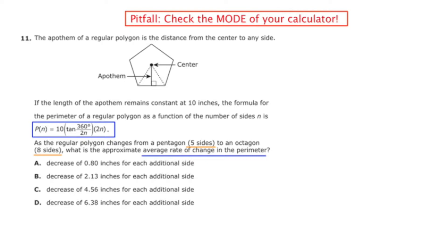You'll notice at the top of the slide that I put in red that there's a pitfall here, and that is to check the mode of your calculator. This function that we're going to be working with, this P(n) function, deals with a trig expression in which the angle is in degrees. So before you even start the problem, make sure that your calculator is in degree mode.